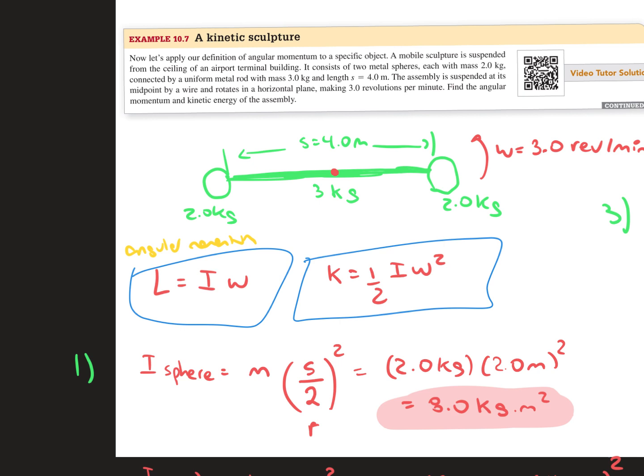As we find the angular momentum, we're going to use the equation L equals the moment of inertia times omega, or the angular velocity. The kinetic energy is going to be one-half moment of inertia times angular velocity squared.